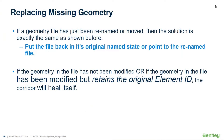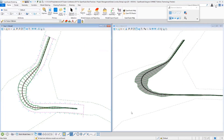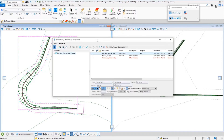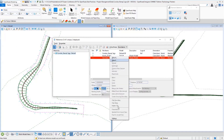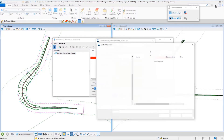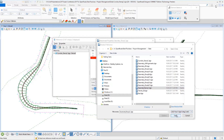How do you fix it? Well, if the geometry file has just been renamed or moved, like you just saw in that case, then the solution is exactly the same as before. Just put the file back to its original name, or you can point to the renamed file. So I'm going to go to the settings dialog, do a browse, and — oh, there it is. Somebody's renamed it. I'm going to say okay.